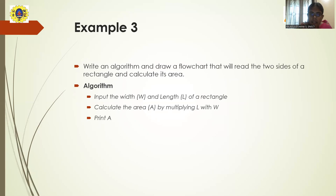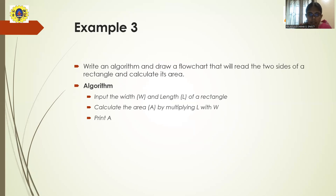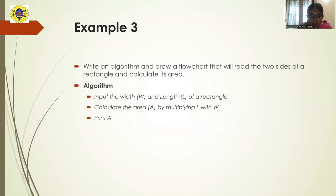Let's look at another example: calculating the area of a rectangle. A rectangle has two different sides — length and breadth. The longer side is called length and the shorter side is called width or breadth. The formula for the area is length multiplied by width. The algorithm is: first, get the input values for length and width; next, calculate the area as A equals L multiplied by W; and finally, print the area.